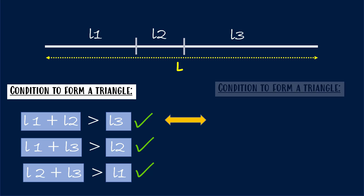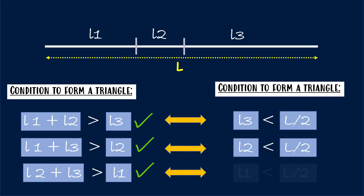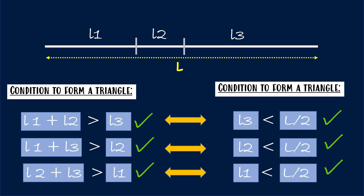You can also consider the condition to form a triangle in this way: the length of any piece should be less than half of the total length of the stick. So L1, L2, and L3 each must be less than L/2. Only then can they form a triangle.